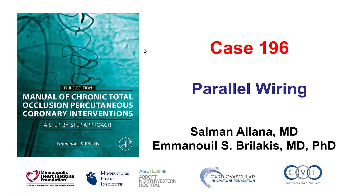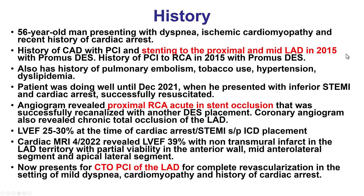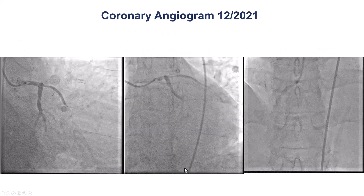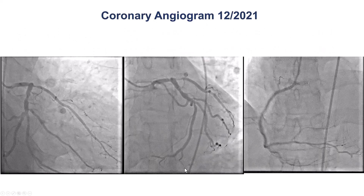The patient had a history of coronary disease with previous stents 7 years prior. He also had, a few months back, an acute inferior STEMI with RCA occlusion treated with stenting, and he was found at that time to have a CTO of the LAD with viability of the anterior wall, and he was referred for PCI of the LAD CTO.